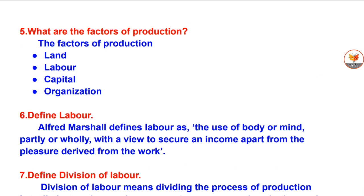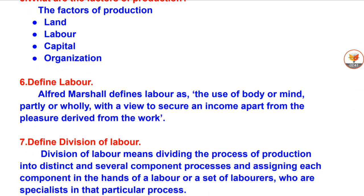Question 5: What are the factors of production? The factors of production are land, labor, capital, and organization. Question 6: Define labor. Alfred Marshall defines labor as the use of body or mind, partly or wholly, with a view to secure an income apart from the pleasure derived from the work.